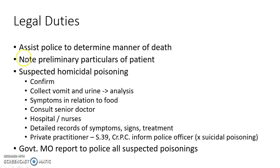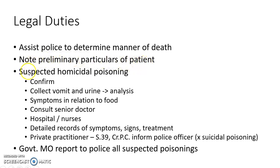The doctor has to assist the police to determine the manner of death. He has to note the preliminary particulars of the patient, like age, sex, identification marks, date and time. In case of suspected homicidal poisoning, the doctor has to confirm his suspicion.